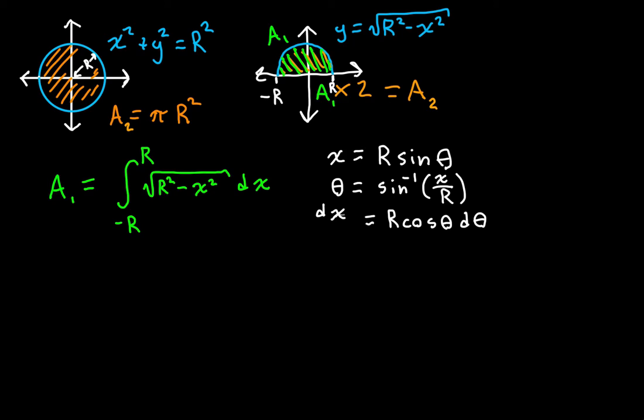Now all I'm going to do is plug this in. Before, we had the integral from x equals negative r to x equals r. But now we're dealing with theta, so rather than break this into an indefinite integral and plug back in, I think it's easier to go straight forward and convert all the x's into thetas. We know that theta is the arcsine of x over r.